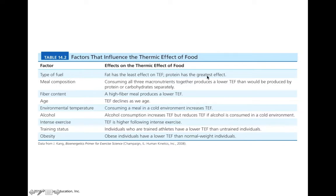Factors influencing thermic effect include the type of fuel: protein has the greatest effect, fat the lowest, and carbohydrates somewhere in the middle. The composition of the meal also matters — if you consume all three macronutrients together, you have a lower TEF than if you consume protein or carbohydrates separately; adding fat lowers your TEF. Higher fiber meals lower your TEF while lower fiber meals increase it. As we get older, TEF declines. Environmental temperature also plays a role: if it's cold, TEF increases; if it's warm, TEF decreases.